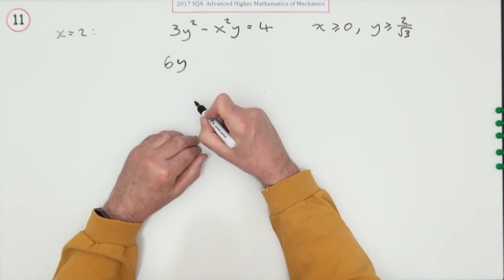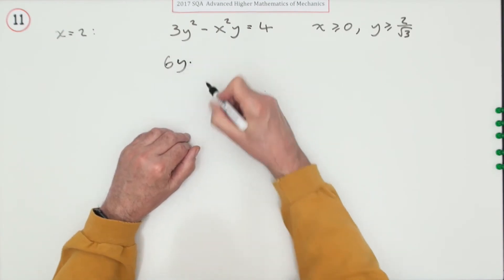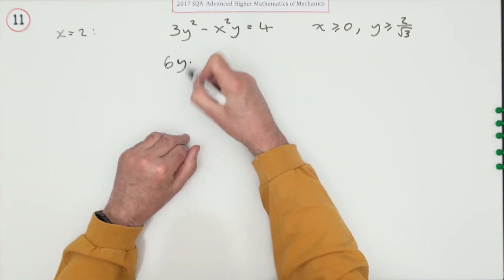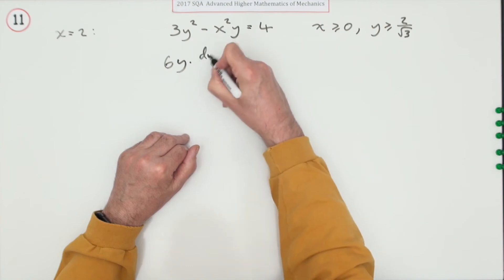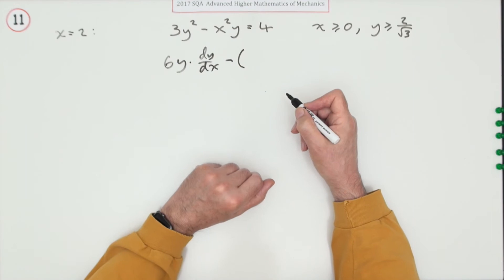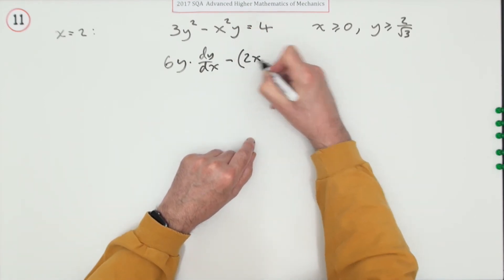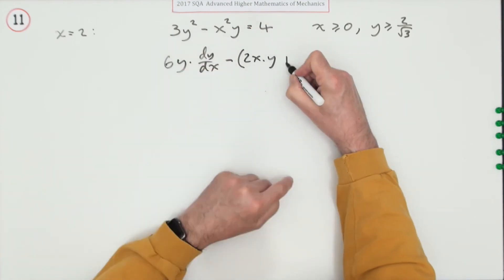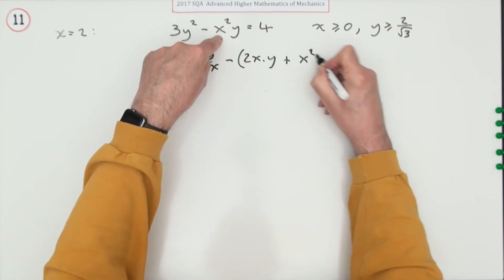Next, you have a product. Differentiate 2x and leave y alone, then leave 2x alone and differentiate y.